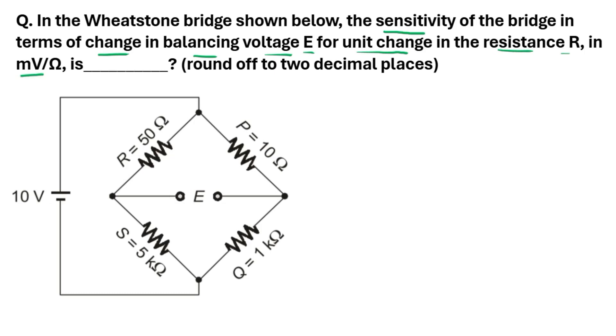If you understand the question clearly, then we can easily solve this problem. Here in the question, change in the balancing voltage E for unit change in the resistance R, that means we need to find out the output voltage E when resistance R is changed by 1 ohm.